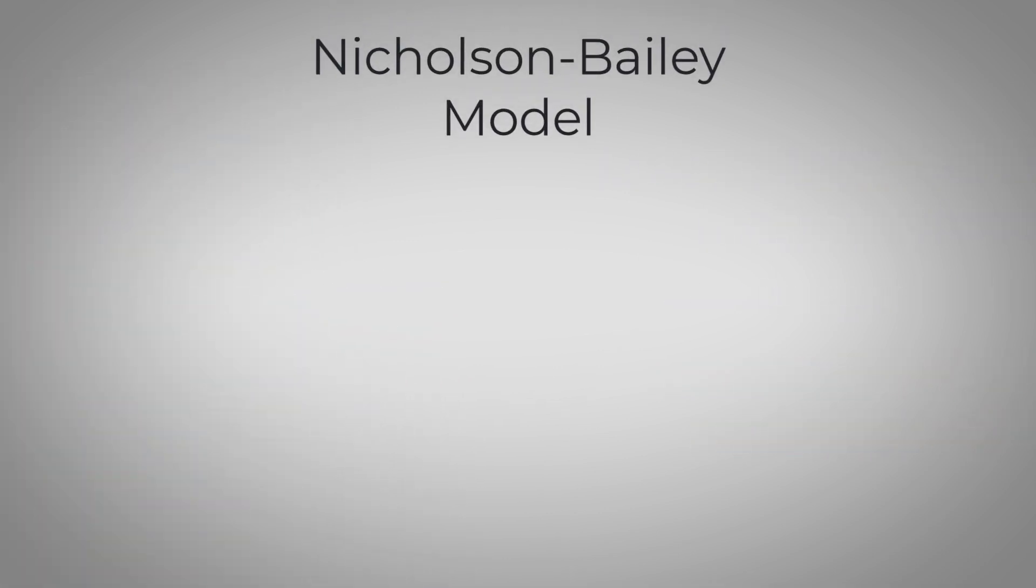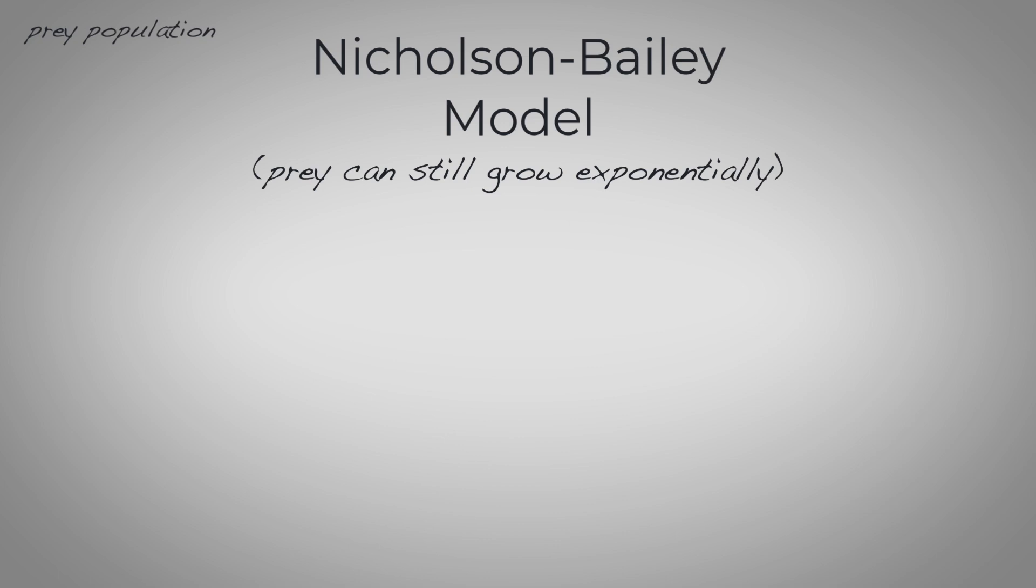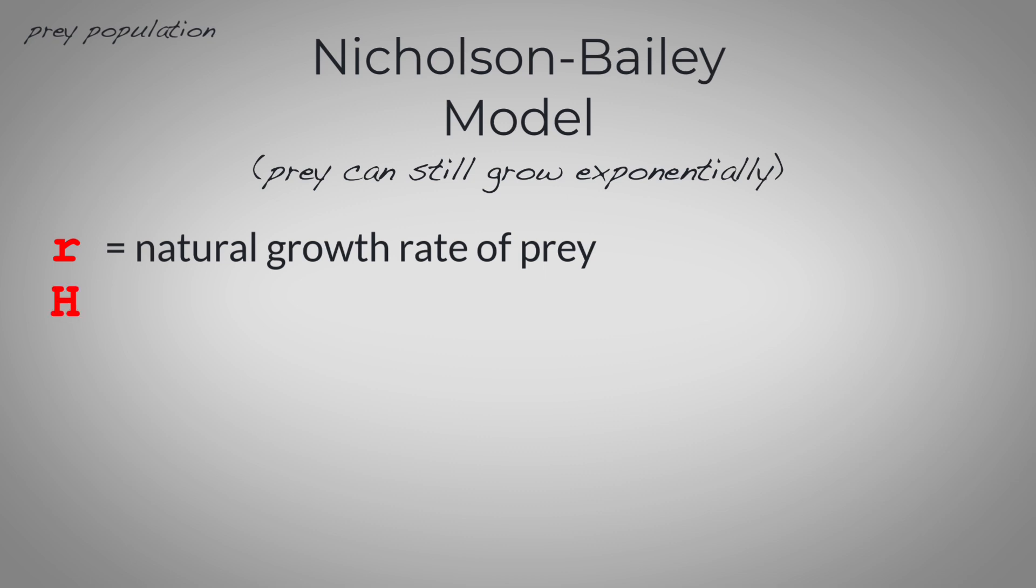In the Nicholson-Bailey model, the prey population still grows exponentially, similar to the Lotka-Volterra model. So we'll start with the variable r, which is the natural growth rate of the prey population. Then we have a variable h, which is the prey population density. If we multiply these together, that will tell us something about what the prey population will look like in the future.